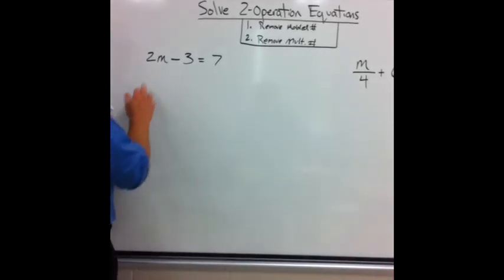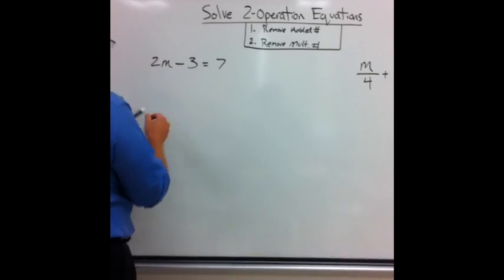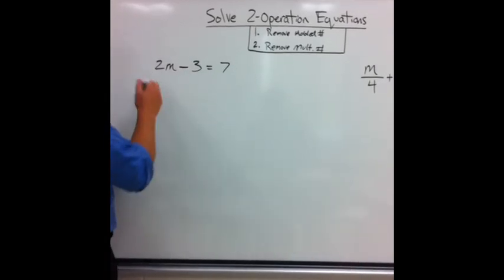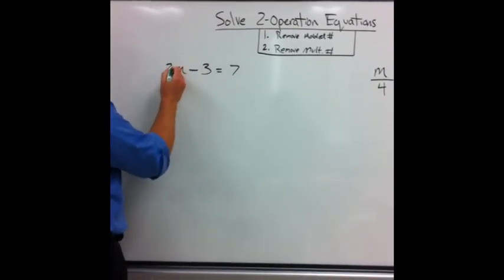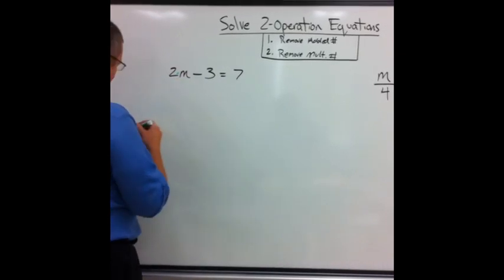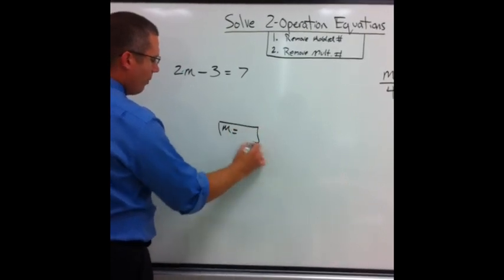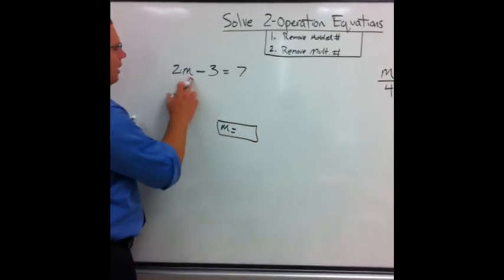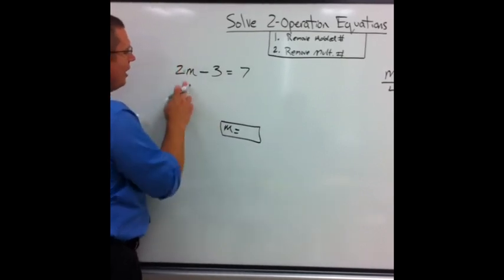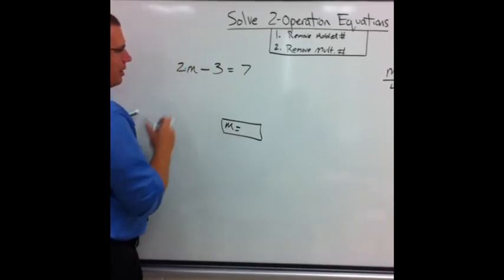We're only going to look at two examples. In my first example I have 2 times n minus 3 equals 7. Remember when I have a number beside a variable it's multiplied. This will happen second. I must end up with the variable by itself for my solution. So what does this mean? If I look at the left-hand side, I have a times 2 I must get rid of, and I have a minus 3 I must get rid of.